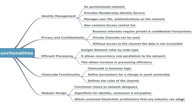The chain code functionality — called smart contracts in other blockchain platforms — is simply business logic in Hyperledger Fabric. Chain code applications encode logic that is invoked by specific types of transactions on a channel. It defines parameters for changes in asset ownership, where an asset is something measurable with value. It also defines rules within channels so that business logic applies to the specific organizations that are part of that channel.